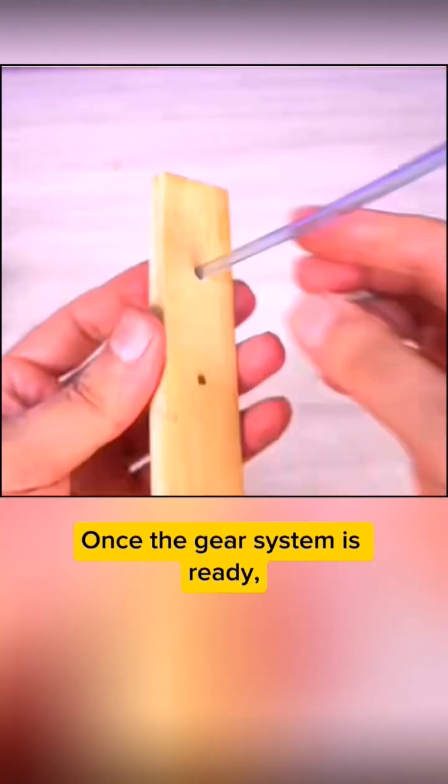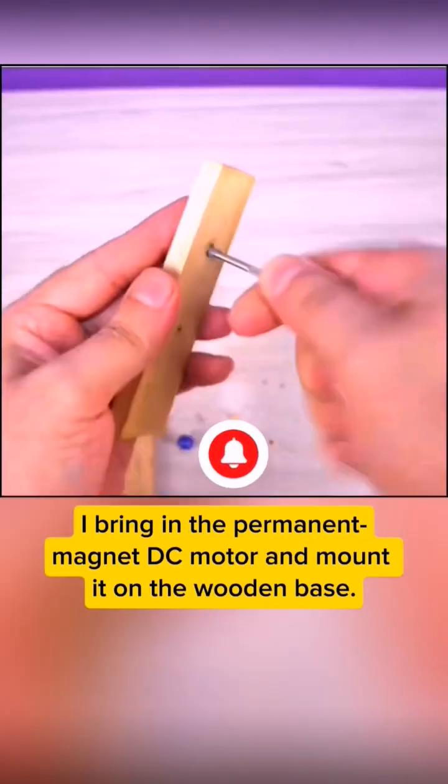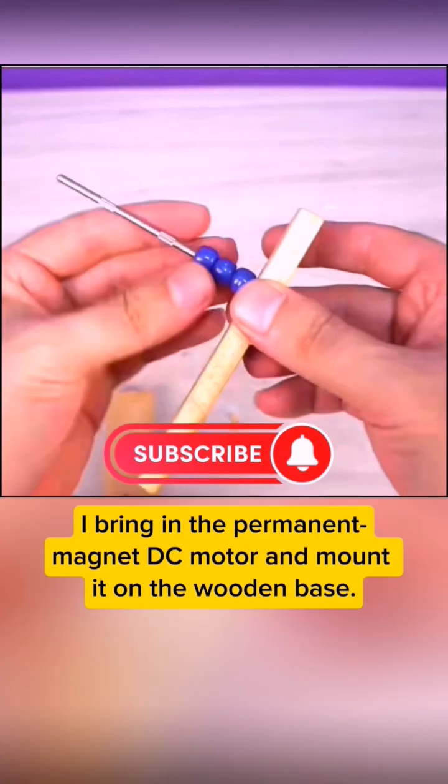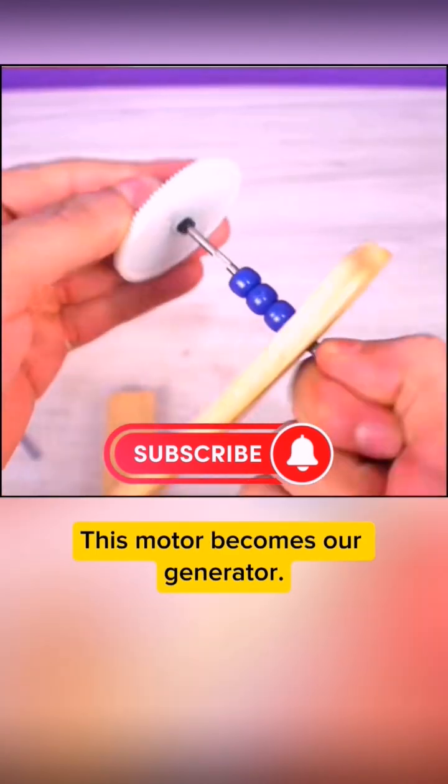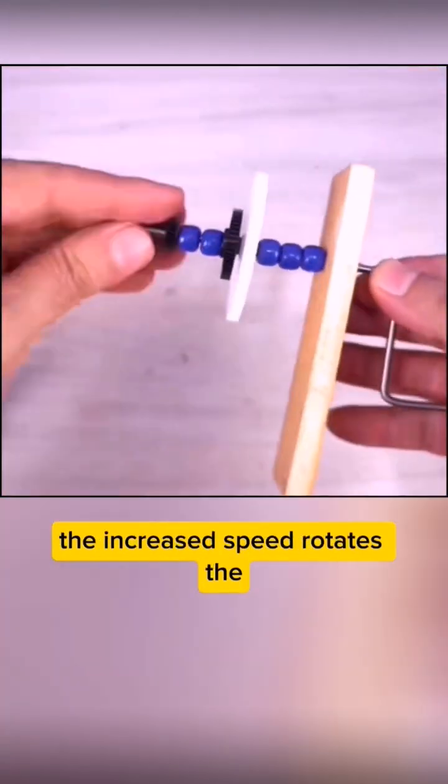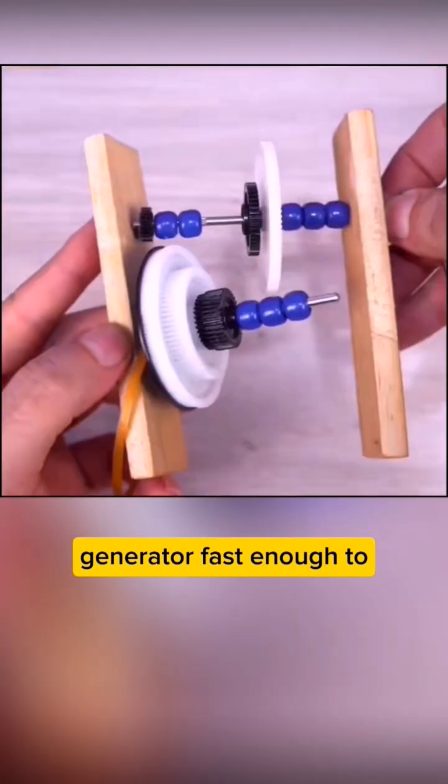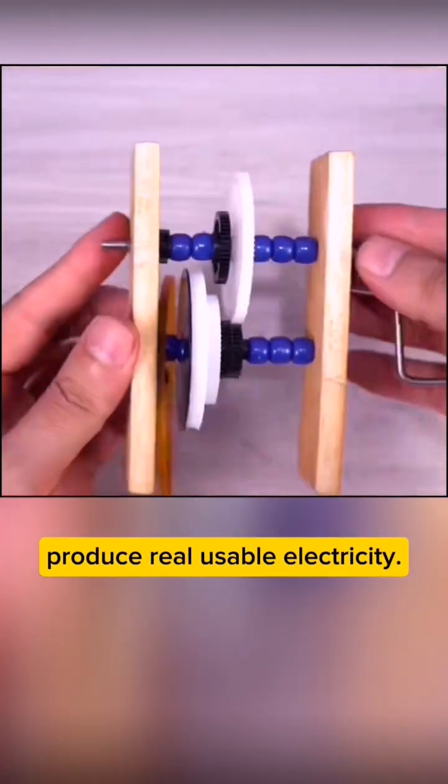Once the gear system is ready, I bring in the permanent magnet DC motor and mount it on the wooden base. This motor becomes a generator. When the crank turns the gears, the increased speed rotates the generator fast enough to produce real usable electricity.